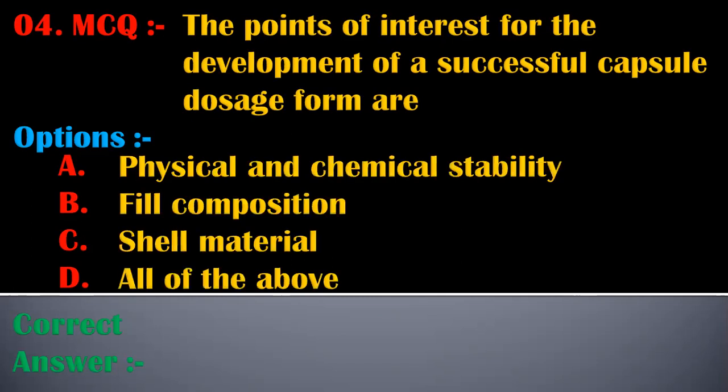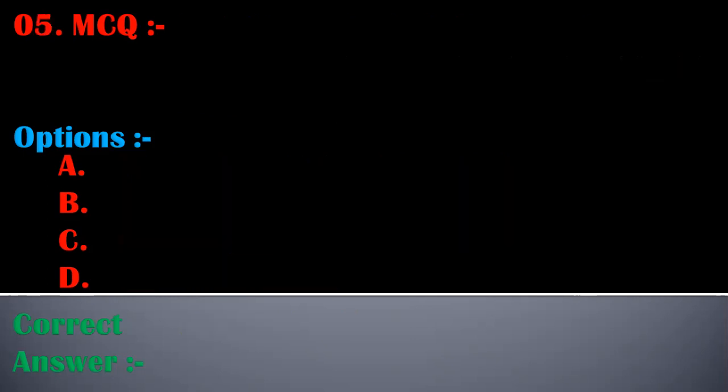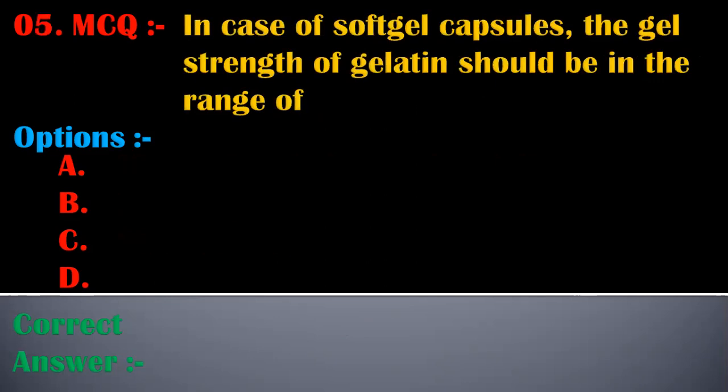The fourth MCQ is: the points of interest for the development of a successful capsule dosage form are — options are physical and chemical stability, fill composition, shell material, or all of the above. The correct answer is all of the above. The points of interest for the development of a successful capsule dosage form are physical and chemical stability, fill composition, and shell material.